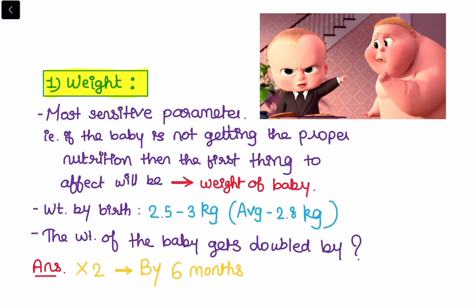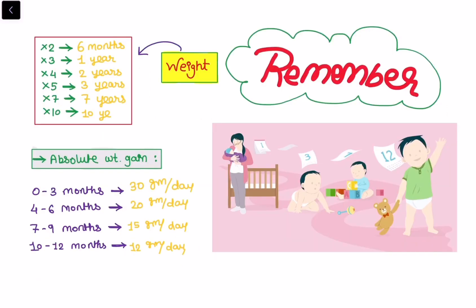Remember, this question can also be asked as: the weight of the baby gets 100% of its birth weight by the age of — the answer is again six months. Do remember by heart: the newborn's weight gets doubled by six months, three times by one year, four times by two years, five times by three years, seven times by seven years, and ten times by ten years. Now talking about absolute weight gain: